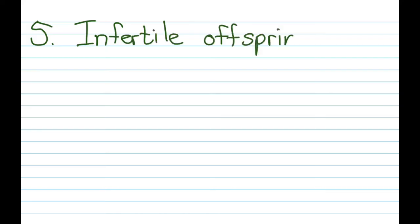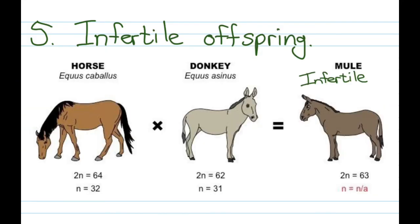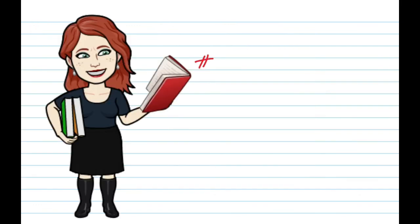Our fifth one is infertile offspring. An example is a horse crossed with a donkey — they do have offspring, but that offspring is called a mule, and the mule is infertile. Why? Because the chromosomes simply do not match. So in this case there was offspring, but the offspring are not fertile, meaning a mule cannot become a new species.